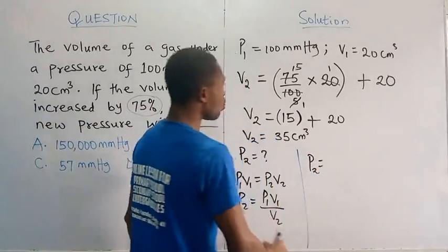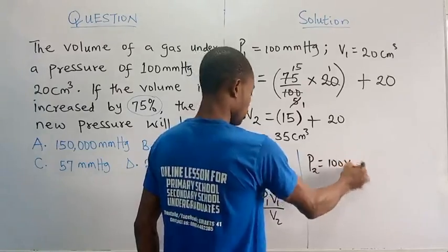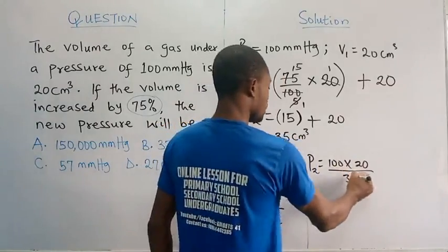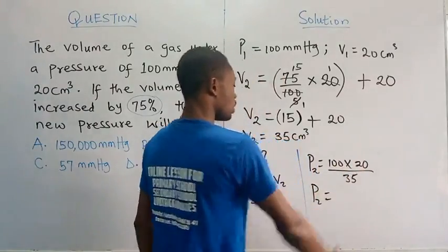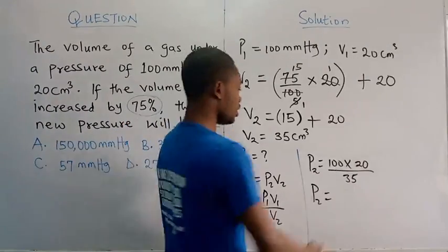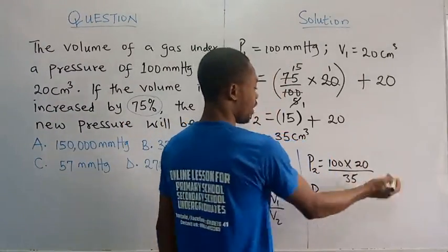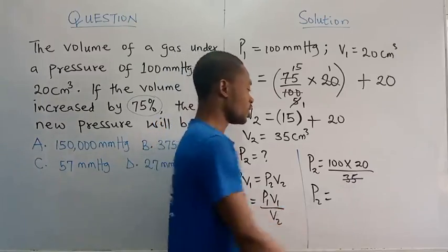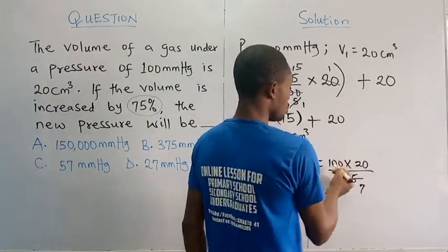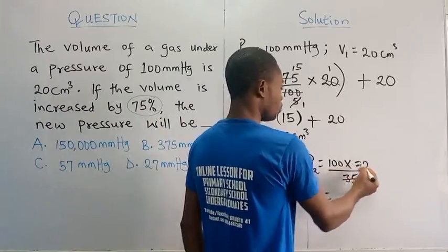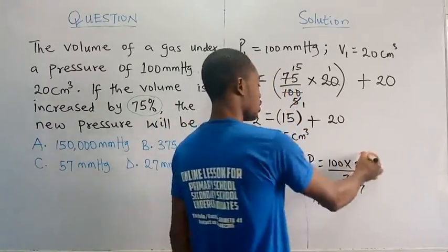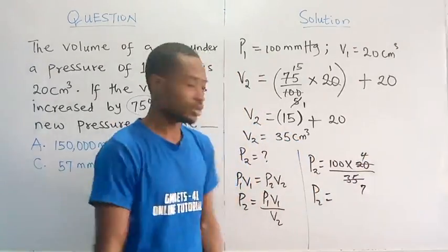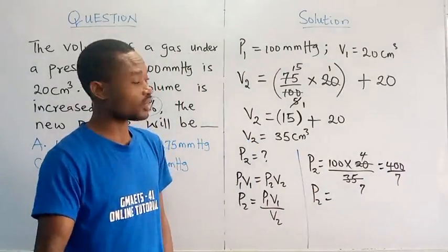So the P2 value will now be P1 given to us is 100, V1 given to us is 20. We are dividing by V2, which is 35. So what's going to be the P2 value? Let's see, you can reduce this. If you want, use 5 to reduce. And 5 into 35 would give us 7. And 5 into 20 is going to give us 4. So we have 400 over 7.